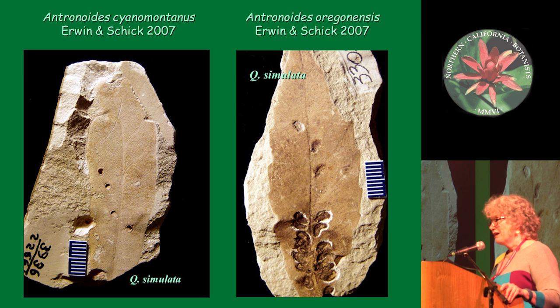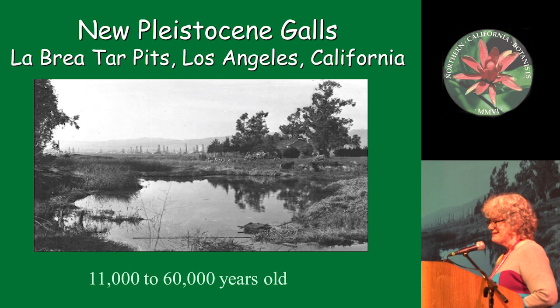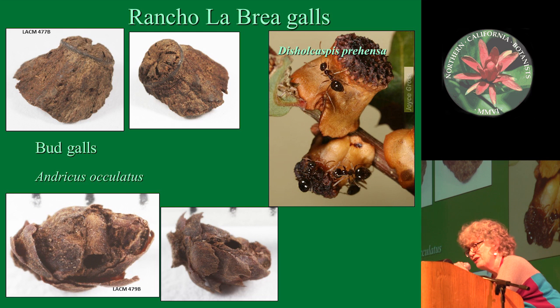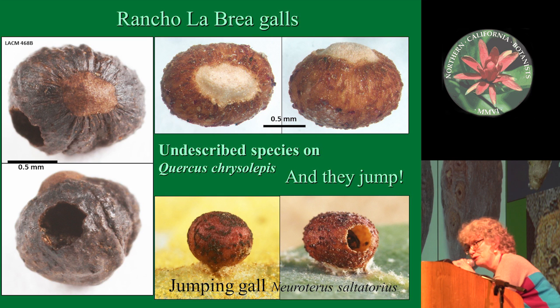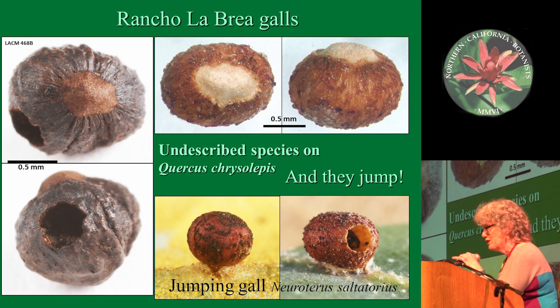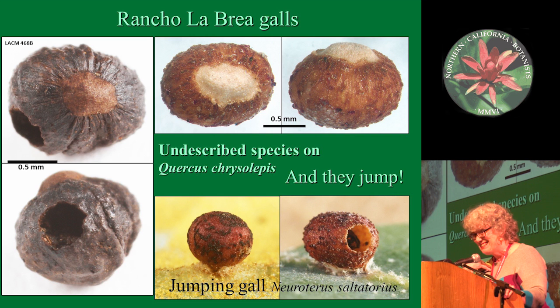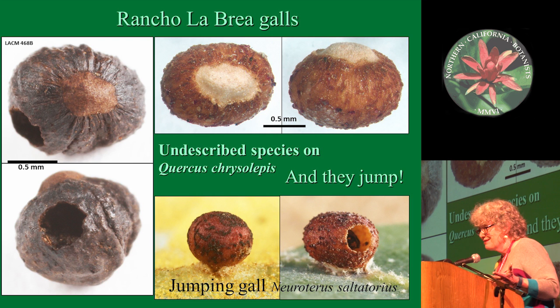They probably weren't as specialized back then. But most importantly and most exciting, we have new three-dimensional galls from the tar pits. From Rancho La Brea, you can see in the upper right the modern gall that matches the one on the upper left. More modern galls on the right and Rancho La Brea galls on the left. Finally, we come to an undescribed species found right near the La Brea tar pits — a species nobody had seen before. It turns out to be a jumping kind of gall, but it's not the same as our modern jumping gall, and we never discovered this until after we found the fossils. In conclusion, there's a lot of diversity and we need to study these a lot more. Thank you.